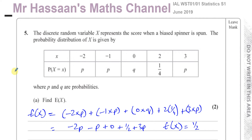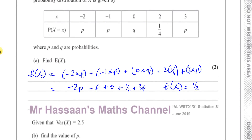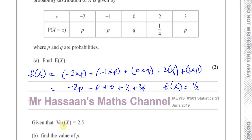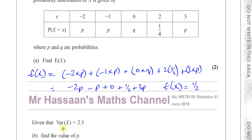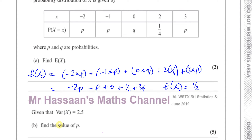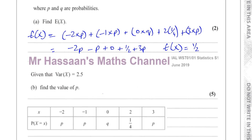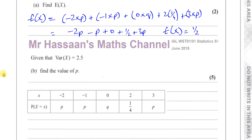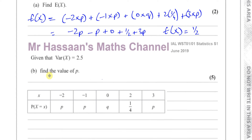So the expected value of X is one half, 0.5. Then it says: given that the variance of X is 2.5, find the value of P. So we know the variance of X is 2.5 and we've got to find the value of P.